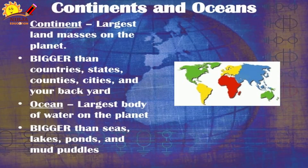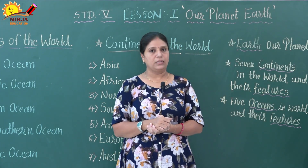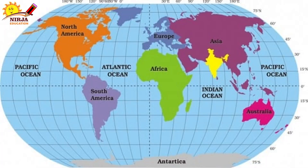So here we are going to learn about the continents and oceans on the surface of our planet Earth. The continents of the world are: Asia, Africa, North America, South America, Antarctica, Europe, and Australia. And the oceans of the earth are: first, the Pacific Ocean — this is the biggest ocean in the world — then the Atlantic Ocean, Arctic Ocean, Indian Ocean, and the Southern Ocean. These are the five major oceans in the world.